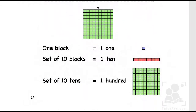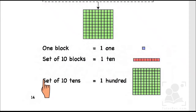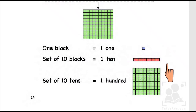We can say that one block is one unit. A set of ten blocks or group of ten blocks is one ten, because we have ten blocks in one group. But when we have a set of ten tens - these are ten tens, these are ten groups - one, two, three, four, five, six, seven, eight, nine and ten - so these ten sets of ten blocks becomes one hundred. So we have one unit, one ten, and one hundred.